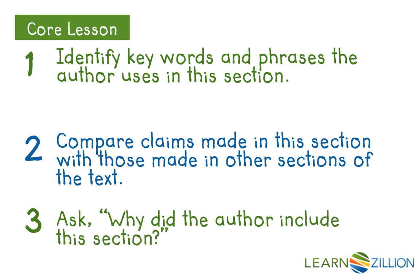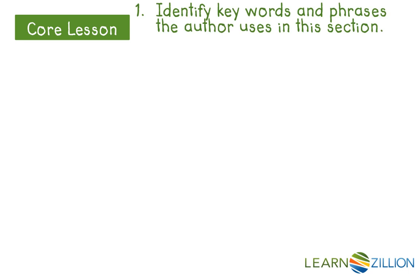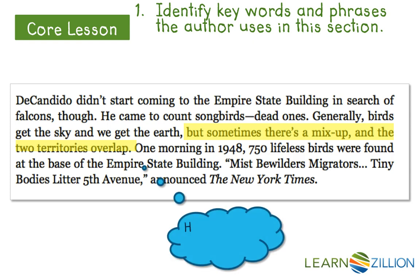Let's begin with Step 1, which asks us to identify key words and phrases that the author uses in this section. So let's zoom in on the songbird section. Here, in this paragraph, Submaranian writes: 'But sometimes there's a mix-up and the two territories overlap.' This seems like a key phrase because it's talking about how the songbirds are dying because humans are in the songbirds' territory. So I'm going to highlight this because it's a key phrase.